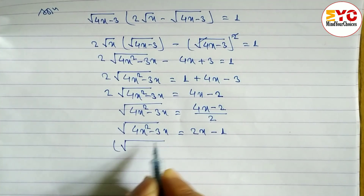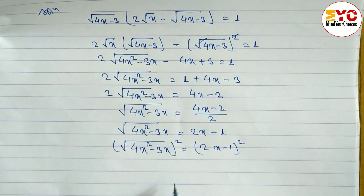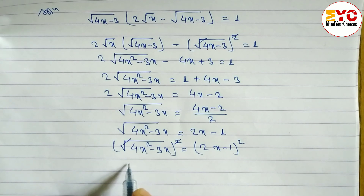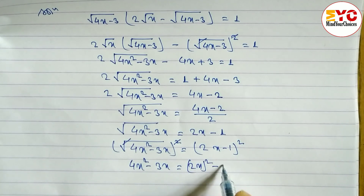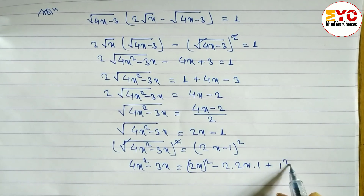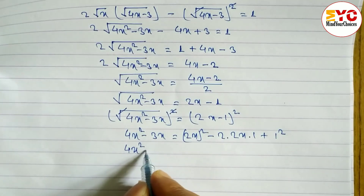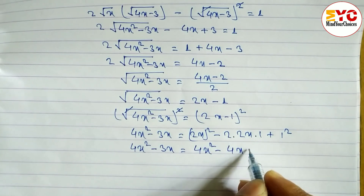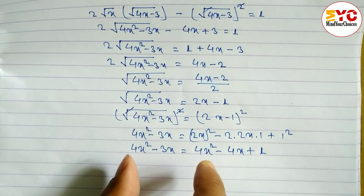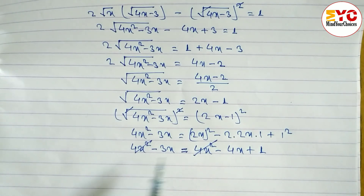After that, to remove this root we have to do squaring on both sides. So: root under (4x squared minus 3x) whole square is equal to (2x minus 1) whole square. Squaring both sides — square and root cancel — leaving: 4x squared minus 3x is equal to (2x minus 1) whole square. Using the formula a squared minus 2ab plus b squared, where a is 2x and b is 1: 4x squared minus 2 times 2 times 4x plus 1. You can see 4x squared appears on both sides with the same sign, so we can reduce them.